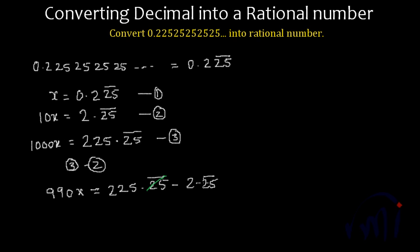So this recurring 25s will get cancelled and we have 990x equal to 990x equal to 225 minus 2 is 223. And from here we will get x is equal to 223 divided by 990.